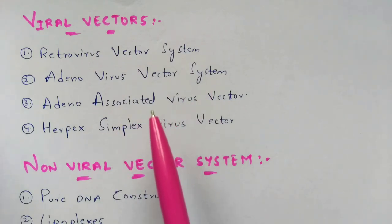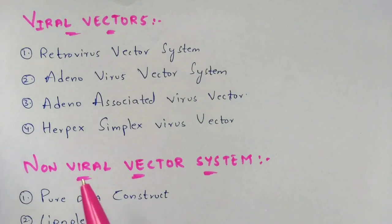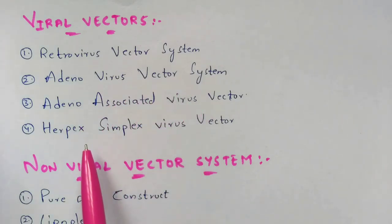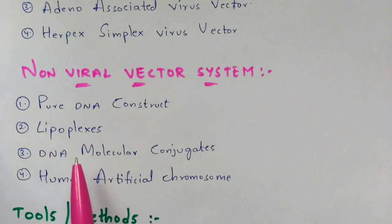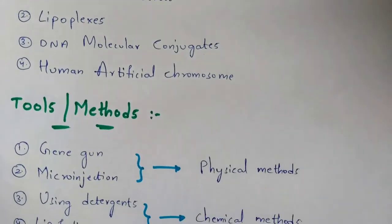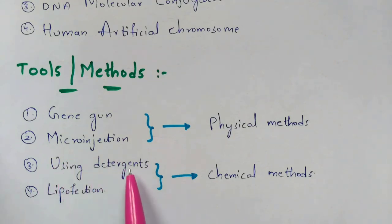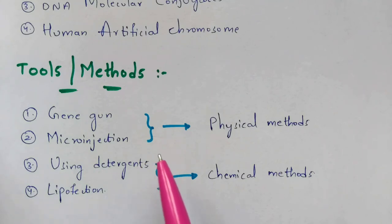For both in vivo and ex vivo gene therapy, viral or non-viral vectors are used. Viral vector examples include retrovirus, adenovirus, adeno-associated virus, and herpes simplex virus vector systems. Non-viral vector examples include pure DNA constructs, lipoplexes, DNA molecular conjugates, and human artificial chromosomes. The main tools and methods used in gene therapy are gene gun and microinjection — physical methods — and detergents and lipofection — chemical methods.